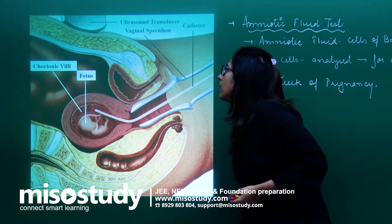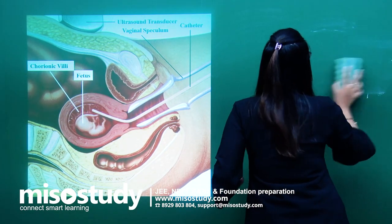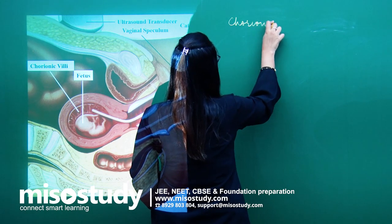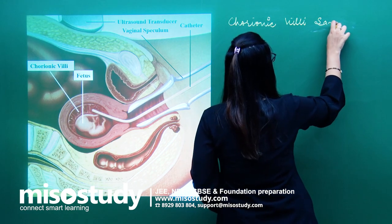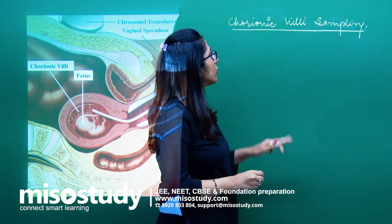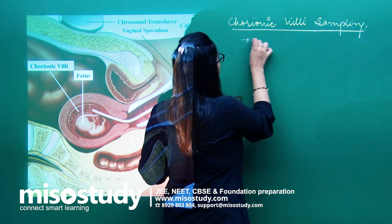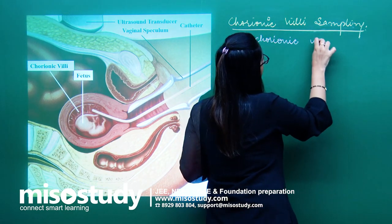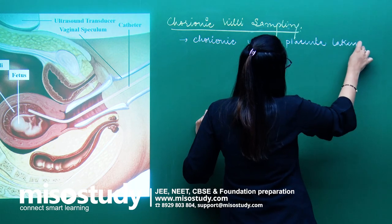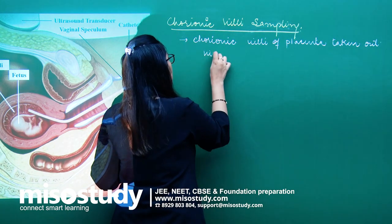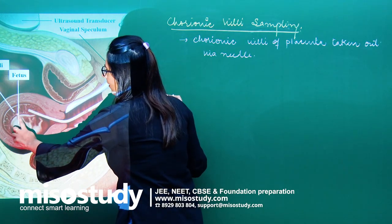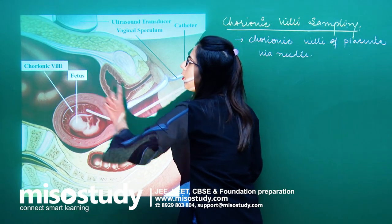The second method is chorionic villi sampling. Chorionic villi sampling is a method in which the chorionic villi are taken out from the placenta. This is the baby, and this baby is attached to the mother via the placenta. The placenta will have chorionic villi present in it.